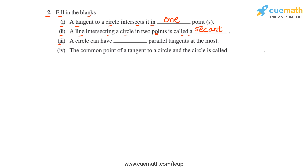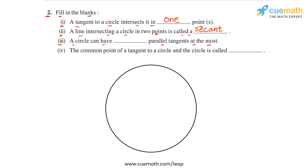Statement three says a circle can have blank parallel tangents at the most. Visualize this carefully — how many parallel tangents can a circle have? Let's draw one tangent for this circle. If this is the point of contact A for the first tangent, how many other tangents parallel to this one can the circle have?